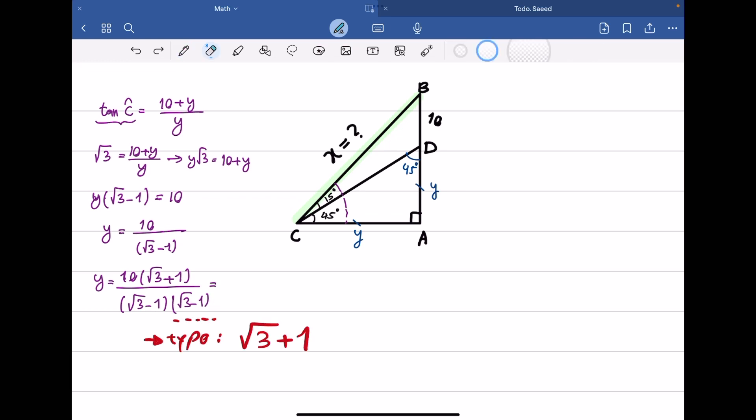The denominator becomes 2, and simplifying gives Y equals 5 times (square root of 3 plus 1).